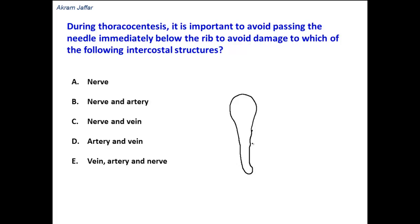This is the external surface, and here is the internal surface. Related to the costal groove, which is related to the lower border of the rib, is the intercostal neurovascular bundle.